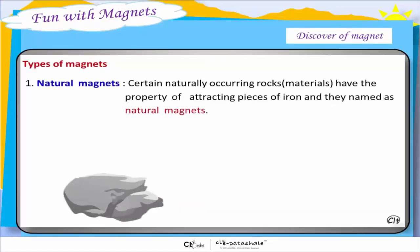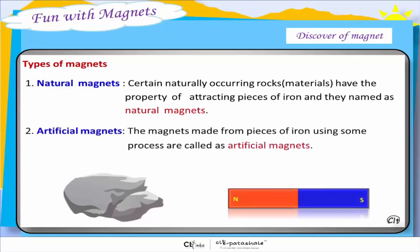Types of magnets. Natural magnet: Certain naturally occurring rocks have the property of attracting pieces of iron and they are named as natural magnets. Artificial magnets: The magnets made from pieces of iron using some process are called artificial magnets.